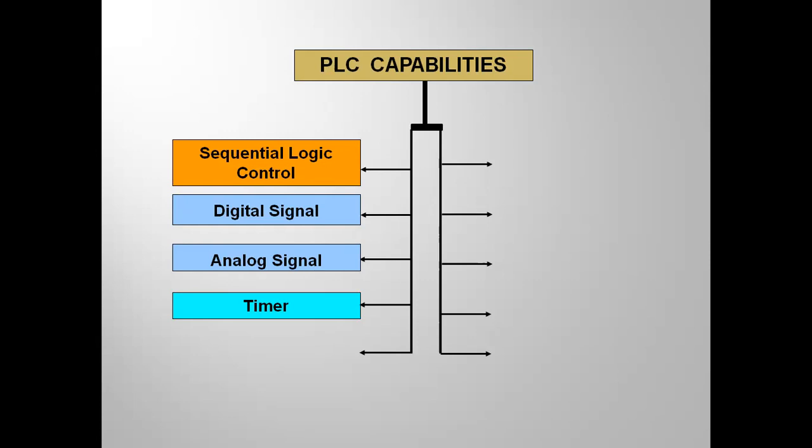Some hardware timers are still used when you need auto and manual mode — when PLC is in error and you run the process manually, you still need some hardware timers. Similarly, we are having counters — counting number of pulses. Instead of hardware counters, we are using a software block. Directly from the sensor input, when the sensor is going on and off, on and off — that number of times we are counting using a counter software block in your PLC.